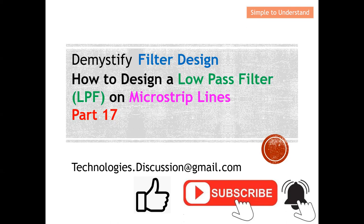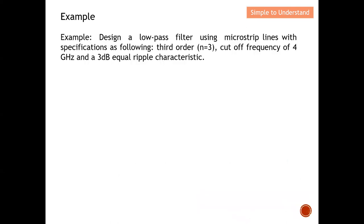Let's start with the problem statement. We need to design a low-pass filter using microstrip line with the following specifications: a third-order filter, cutoff frequency at 4 GHz, and Chebyshev 3 dB equal-ripple characteristics. These are the specifications given to implement this low-pass filter on a microstrip line.